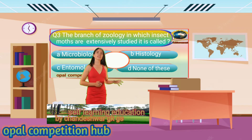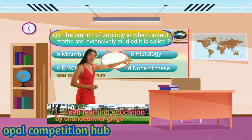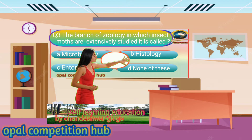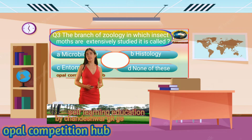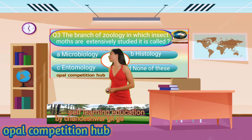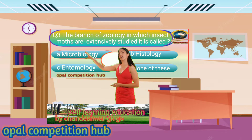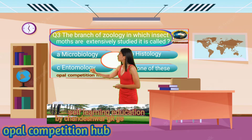Question number 3. The branch of geology in which insects are most extensively studied is called. Your options are: Option A. Microbiology, Option B. Histology, Option C. Entomology, Option D. None of these. Your time starts now.